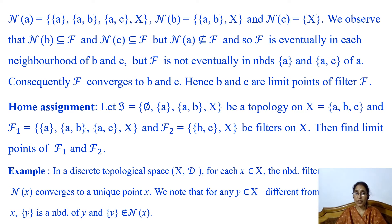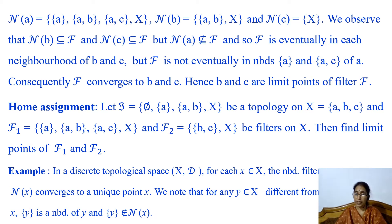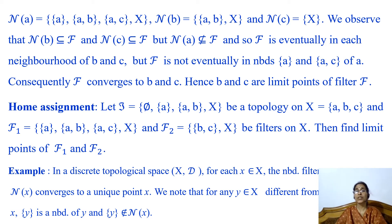Now a home assignment: let X be a set consisting of three points A, B and C, and let T be a topology on X given by the empty set, singleton {A}, doubleton {A, B}, and the whole set X. Let F1 and F2 be filters on X. F1 consists of four members: singleton {A}, doubleton {A, B}, doubleton {A, C}, and the whole set X. F2 consists of two members: doubleton {B, C} and the whole set X. Then you have to find the limit points of F1 and F2.